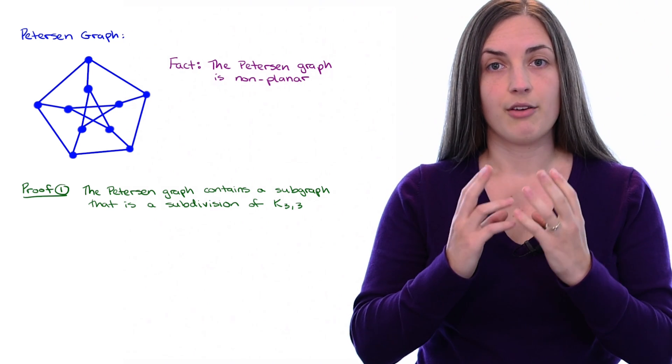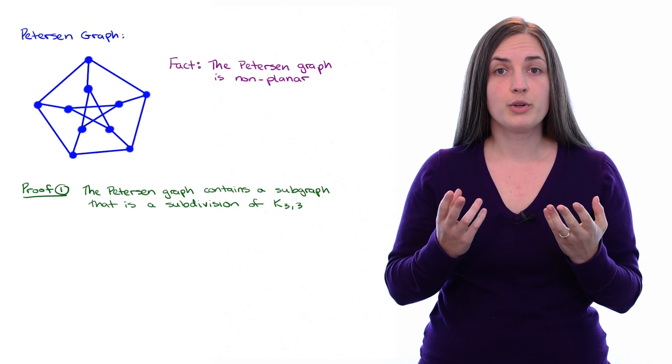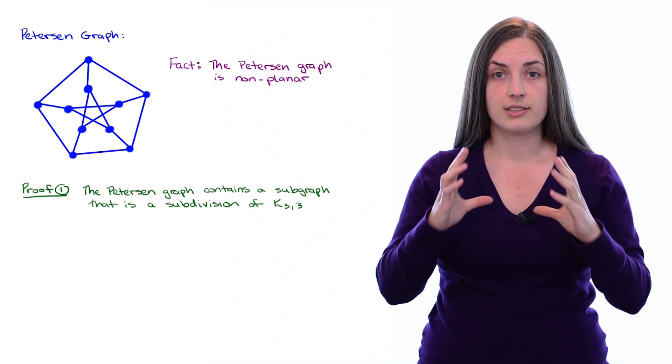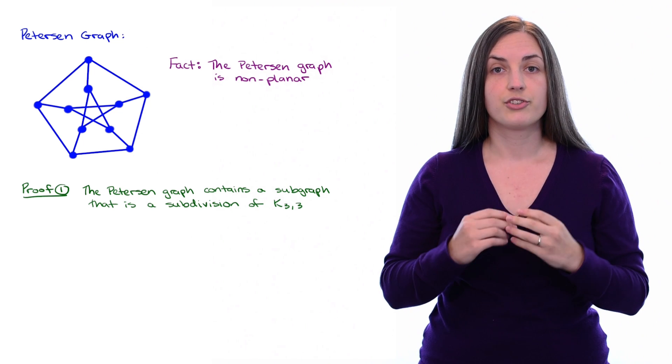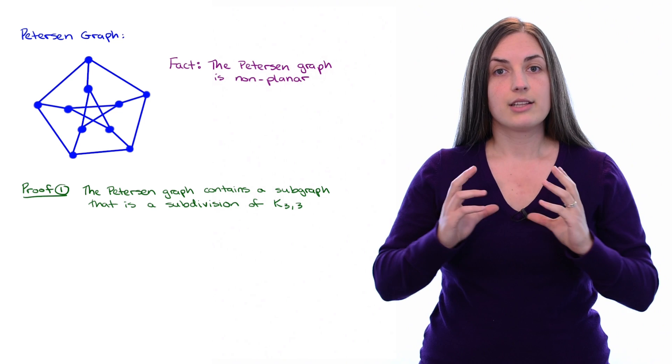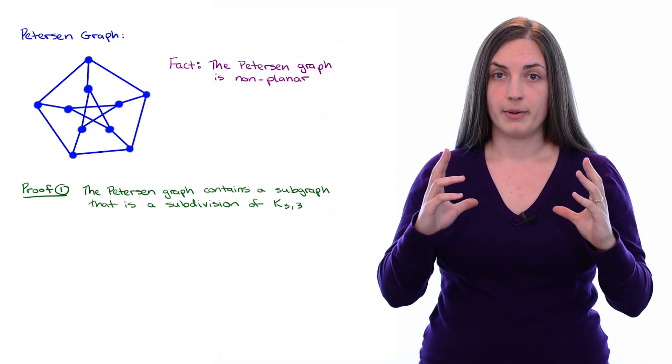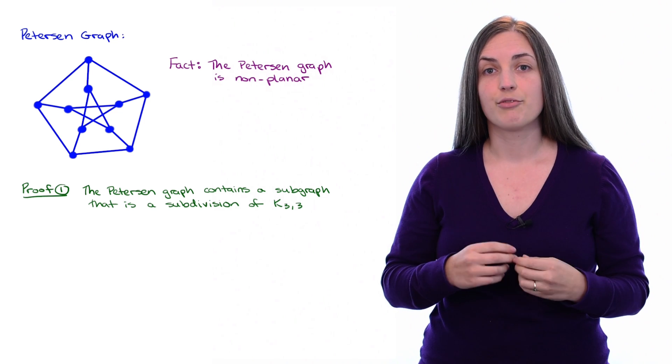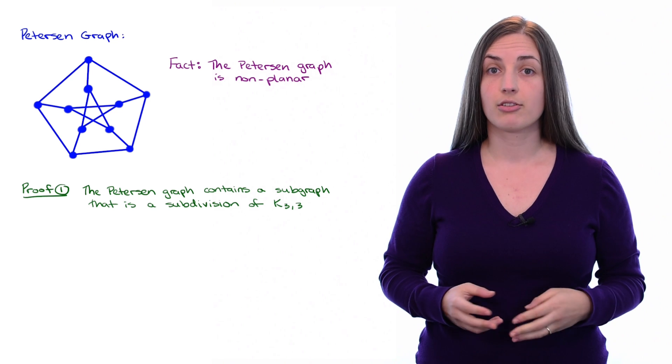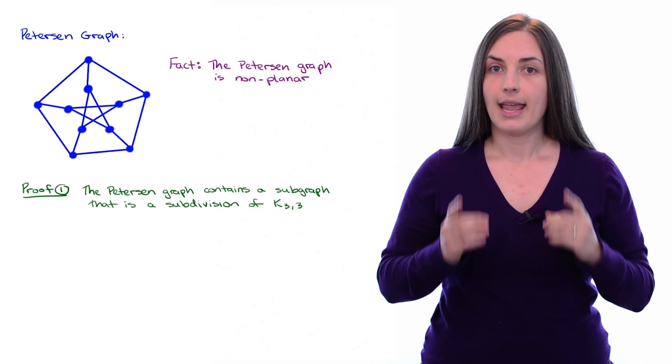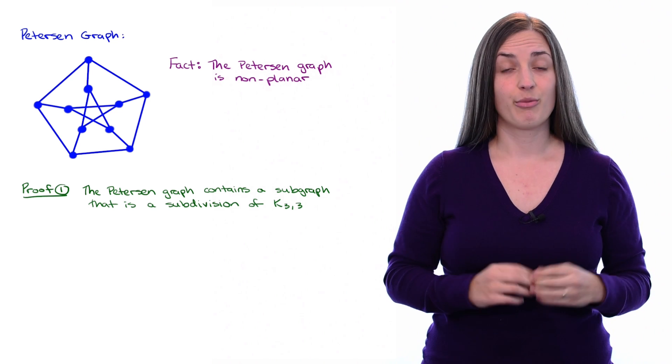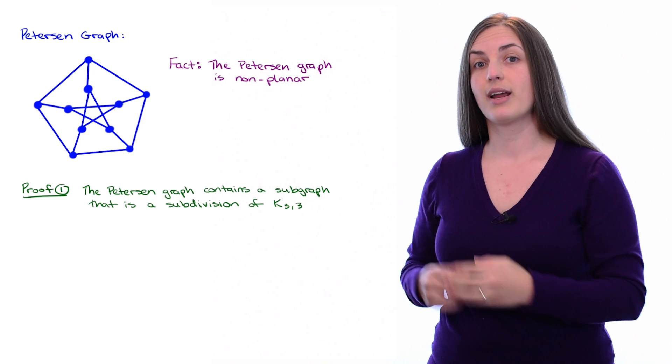So if you were to take that graph and subdivide it, you would still have five vertices of degree at least four. And so if that was a subgraph in your bigger graph, you would need to have at least five vertices which all have degree at least four. And that doesn't happen in the Peterson graph because the Peterson graph is three regular.